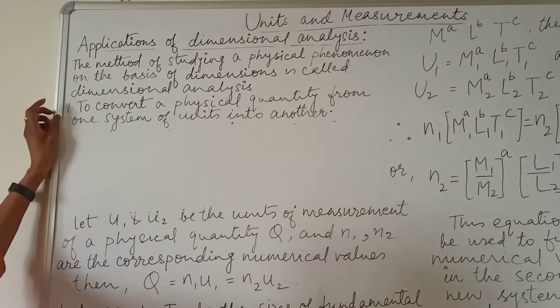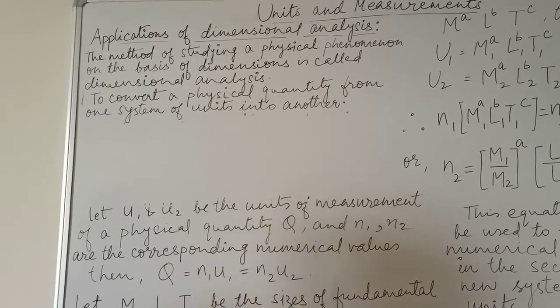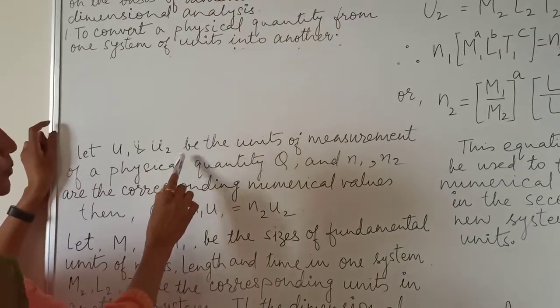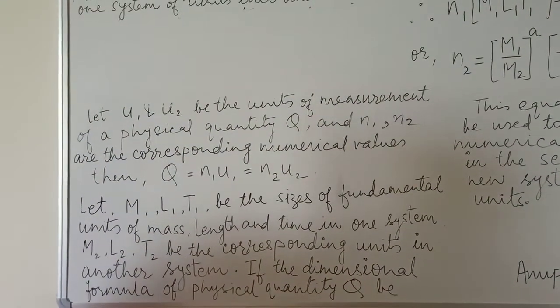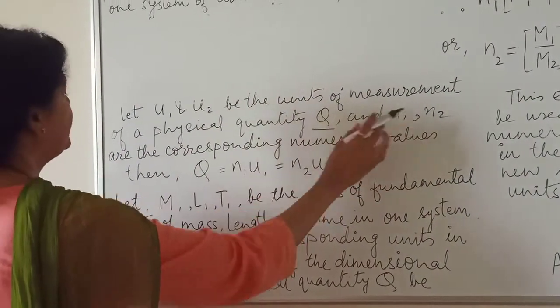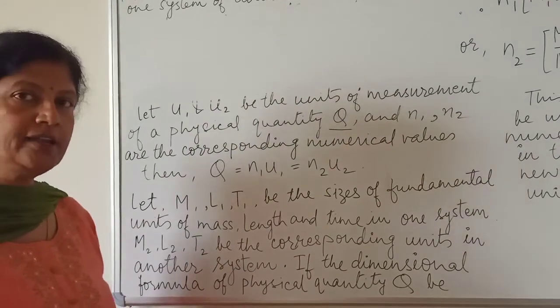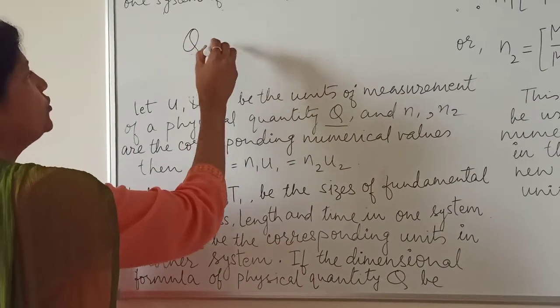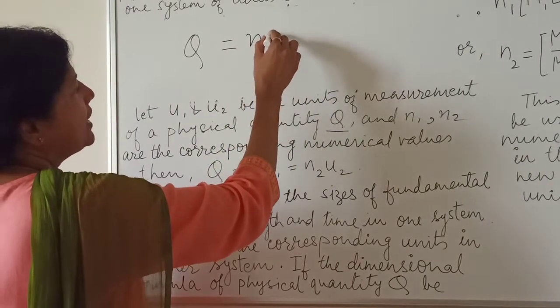To convert a physical quantity from one system of units into another, let us consider: Let U₁ and U₂ be the units of measurement of a physical quantity Q, and N₁, N₂ are the corresponding numerical values. Then, we know that a physical quantity Q is a product of numerical value and unit.